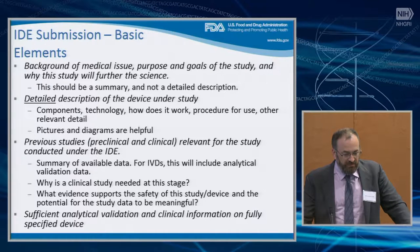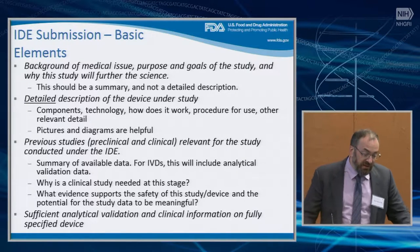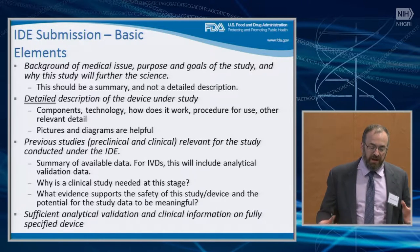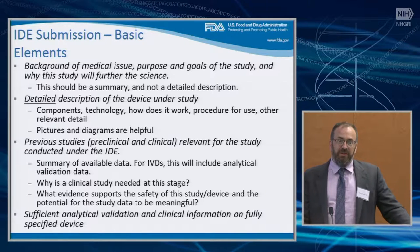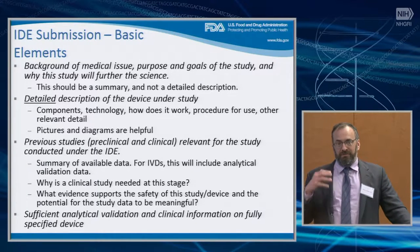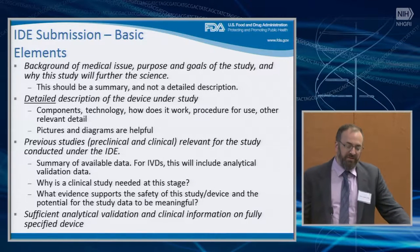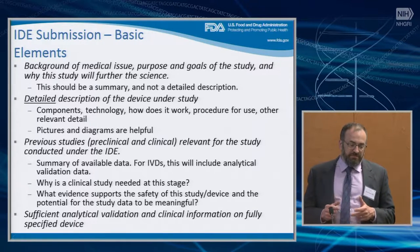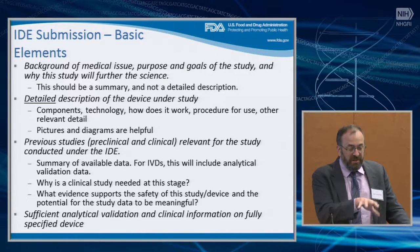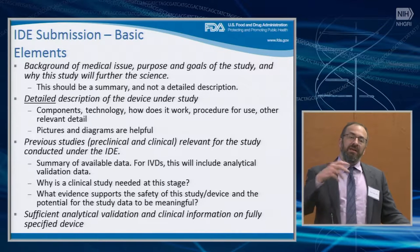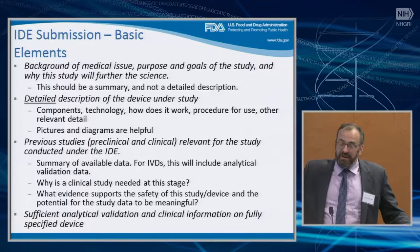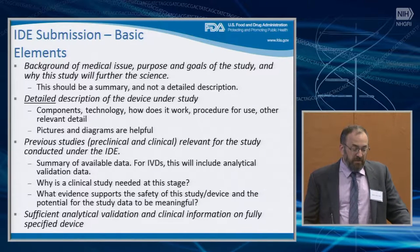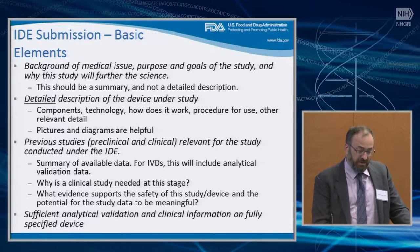The previous studies — preclinical and clinical — would include the analytical validation studies you've done and the evidence that's leading you to put this in a trial. Things that have been studied about the device or technology that aren't relevant to the study are not as important. We need enough analytical validation and information on the device you're going to use in the study. One of the challenges in genomics is that devices are changing rapidly, and there can be many modifications over the course of the study, so you have to consider those modifications.